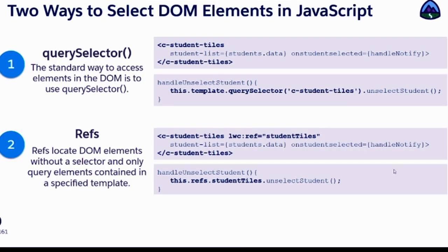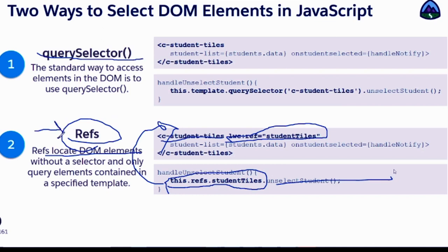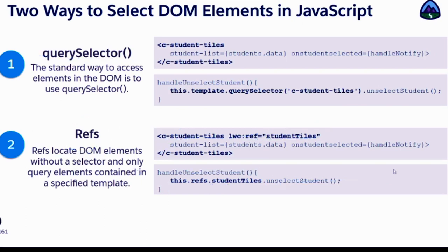There are two ways to select a DOM element: query selector, which we've already seen, and refs. Refs is another template directive — LWC ref student tile. So instead of searching on c-student-tile, you search in this component for a reference by the name student tiles. It will automatically take you to that child component and call the method. This is the latest technique added to LWC. Earlier we used the JavaScript standard query selector; this is the LWC standard. LWC refs create an identifier for the tag — similar to how you'd define an ID on a tag.